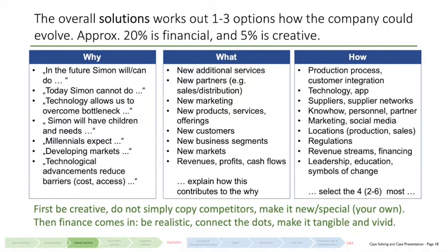They apply marketing. They have certain locations for production and sales, like stores. They are faced with regulation, have a model for revenue streams and financing, a certain style of leadership, employee education, and managing change. That's basically the set of resources companies integrate to provide the 'what' and serve Simon, answering the question of why a solution is needed.